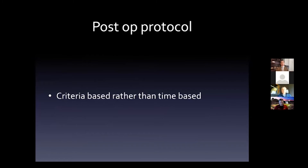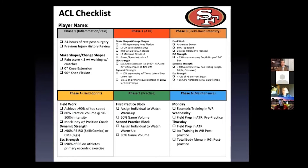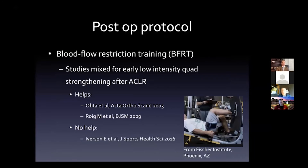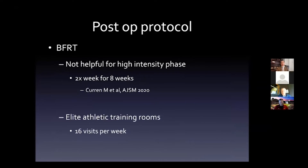Post-op protocols have changed toward criteria-based rather than time-based approaches. Rather than saying at three months we start jog progressions, it's really a checklist - if they check the boxes through isometric and dynamic strength testing, they can advance through phases. For the 49ers, that's usually around three months when they get out on the field. Blood flow restriction - BFR - is something athletes love and want to do. There are studies supporting it and studies finding it unhelpful; a study by Beady's group found it wasn't helpful in the high-intensity phase. But in elite training rooms, those 16 sessions studied are done in one week, making it difficult to interpret those results.